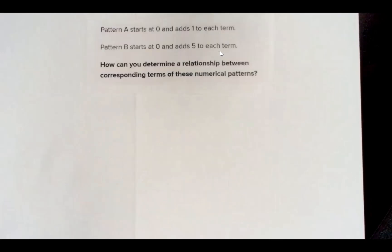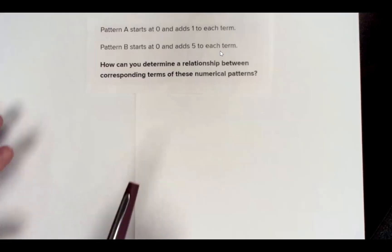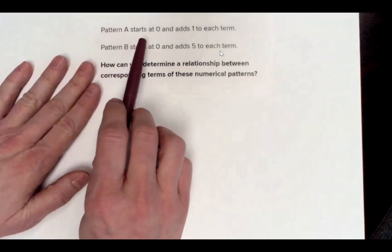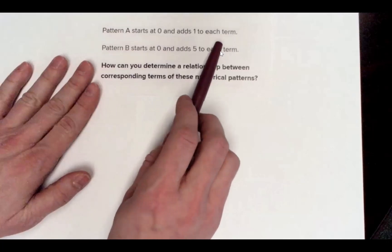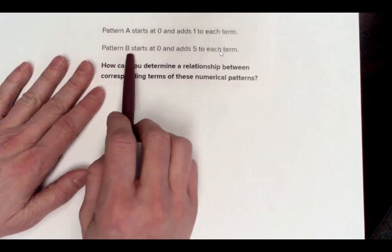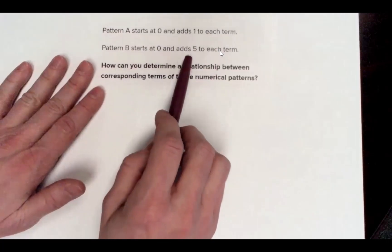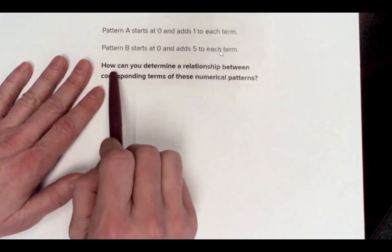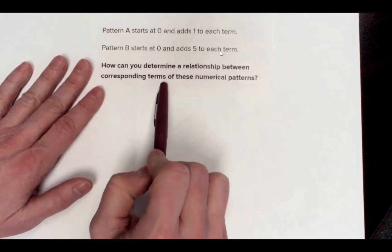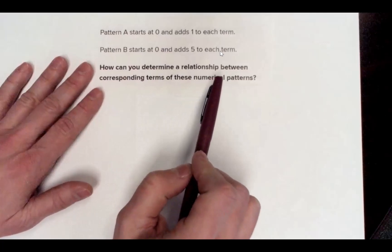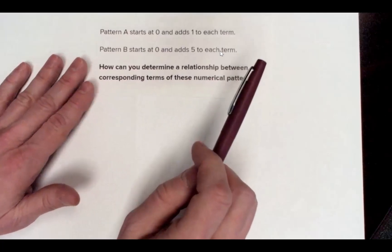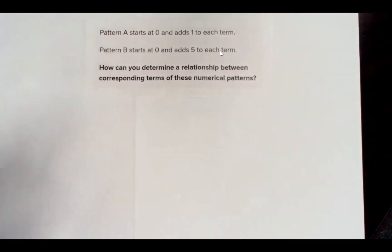Now let's shift our attention to IOA 6A—generating two numerical patterns using a given rule. Let's take a look at this problem: Pattern A starts at zero and adds one to each term. Pattern B starts at zero and adds five to each term. How can you determine a relationship between corresponding terms of these numerical patterns? This problem is from Georgia Reveal, one of your Georgia Reveal resources, and is in a lesson on the pacing guide.